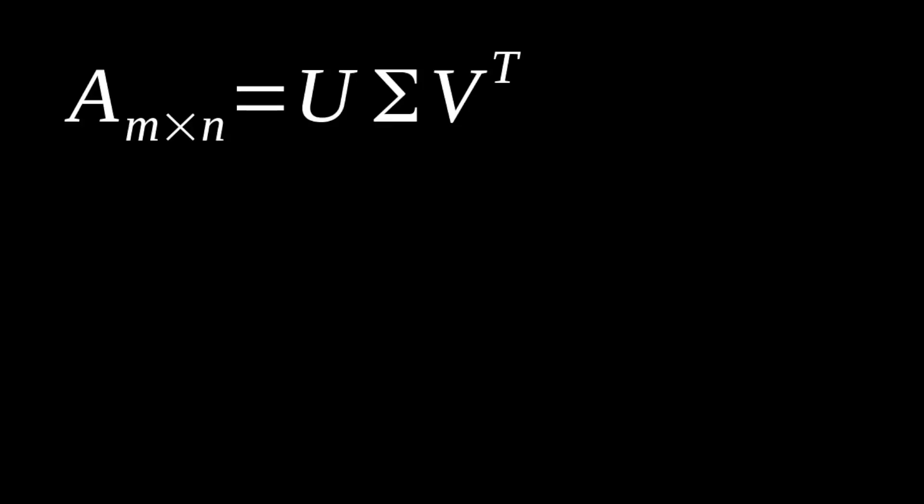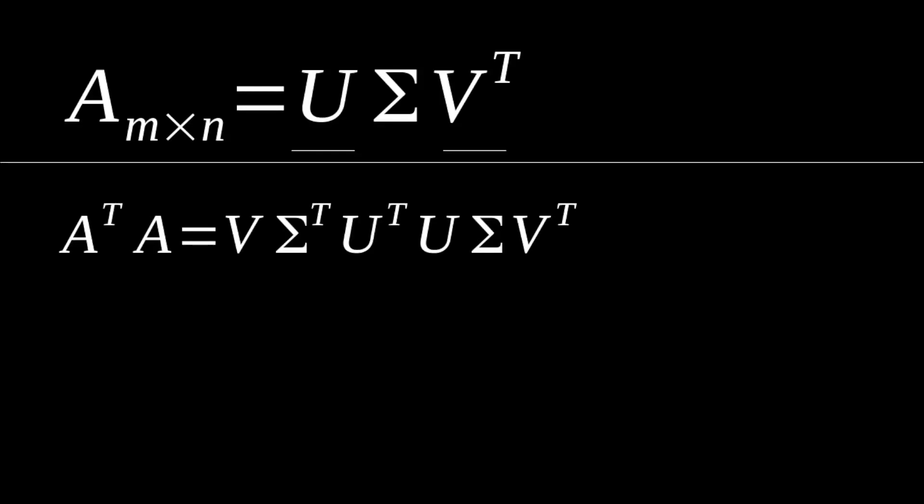Now if we come back to our A matrix right here that is non-square, where we can compute a singular value decomposition for this matrix, to get an understanding of our U and V transpose matrices and how we might get them, we're going to take a look at what happens when we compute A transpose A, for example. When we compute A transpose A, we will get V sigma transpose U transpose by U sigma V transpose.